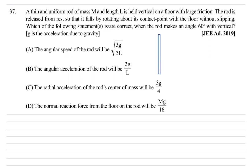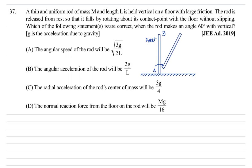Initially the rod is vertical. The ground surface has sufficient friction, so we can assume the rod will rotate about point A. The rod is released from rest from this initial vertical position. We need to analyze the situation after some time when the rod has rotated to a certain position.